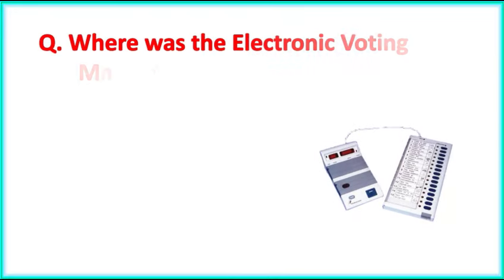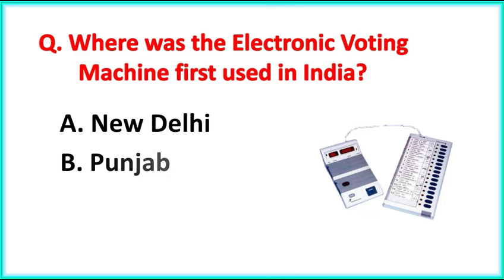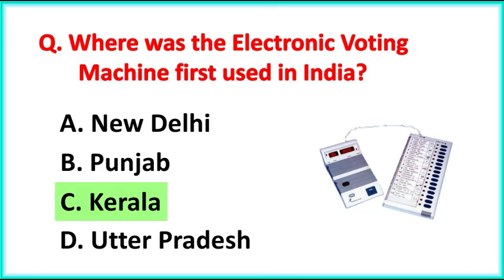Where was the electronic voting machine first used in India? The correct answer is option C: Kerala.